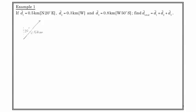So here's our first vector, 0.5 kilometers at an angle north 20 degrees east. We can resolve this. The horizontal component of this vector is 0.5, which is the magnitude, times the sine of 20.